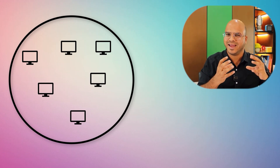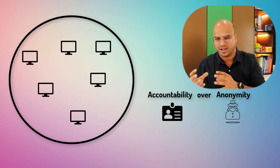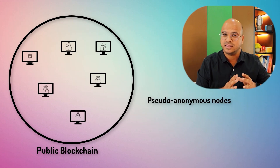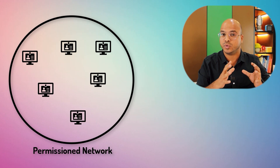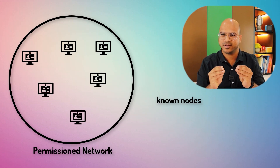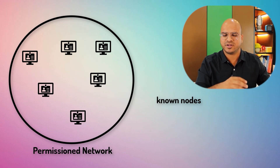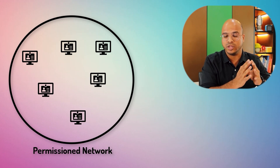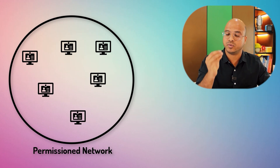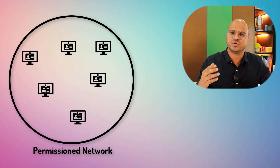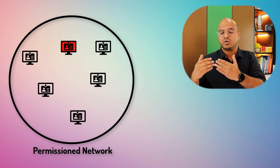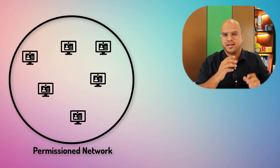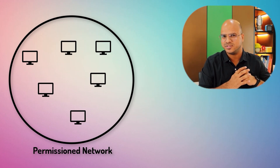In this network we are focusing on accountability over anonymity. In a public blockchain we focus more on anonymous or pseudonymous nodes, but in a permissioned network the nodes need to know each other — they should have an identity and go through KYC and similar processes. We should know who the nodes are. Accountability is important because if someone is doing malicious or questionable work, you can actually see who is responsible for that transaction.